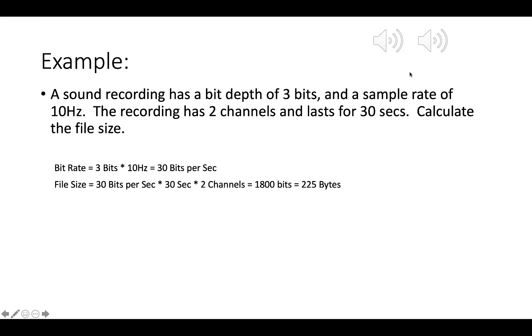So here we have an example. I have a sound recording that's going to have a bit depth of 3 bits and a sample rate of 10 hertz. The recording has two channels and lasts for 30 seconds. Calculate the file size. So the first thing we want to do is calculate the bit rate, or how many bits per second do I need. We can see that I have a bit depth of 3 bits. So each measurement is going to take 3 bits. A sample rate is 10 hertz. So each measurement takes 3 bits. I have 10 samples per second. So that's going to mean 30 bits per second for my bit rate.